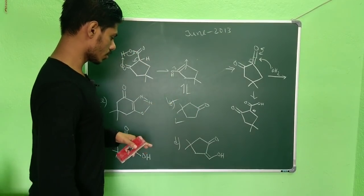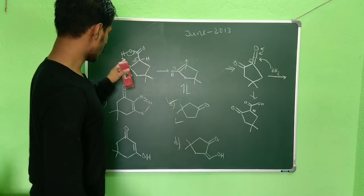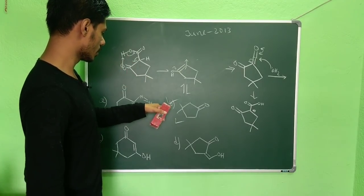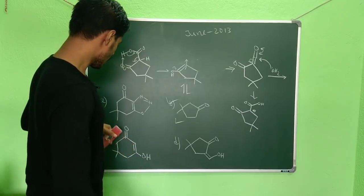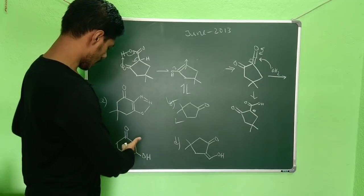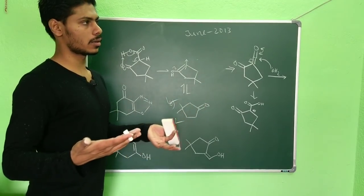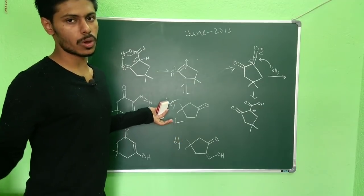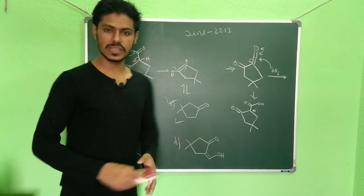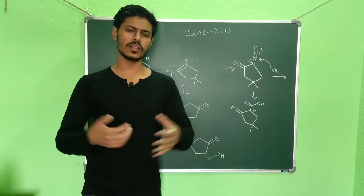You may also be confused with option D, but once you understand the decarboxylation step, you will see that option B is correct. You can ignore options A and C right away because once the carbene forms, rearrangement occurs and the six-membered ring is no longer retained — so those two options can be ruled out very easily. Option B is the correct answer.